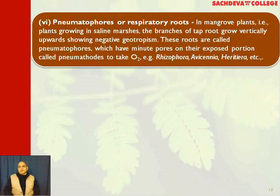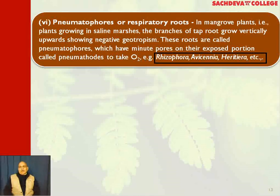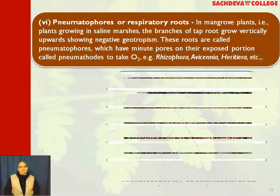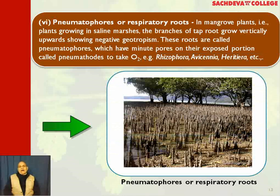Pneumatophores are respiratory roots. In mangrove plants — that is, plants growing in saline marshes — the branches of the tap roots grow vertically upwards, showing negative geotropism. These roots are called pneumatophores, which have minute pores on their exposed portion called pneumatodes, and they take up oxygen. An example is Rhizophora. These are the pneumatophores, or respiratory roots, which help in exchange of gases and are present in marshy land.